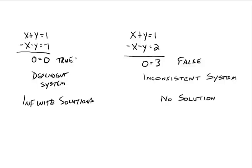Whenever all your letters disappear — whether you're doing the elimination or substitution method — you're left with a statement that is either true or false. In the case on the left, we have zero equals zero, which is a true statement. That means we have a dependent system, and if you were to graph them, one line falls on top of the other — they intersect at every point, so there are an infinite number of solutions. But if all letters disappear and you get a false statement like zero equals three, that's an inconsistent system with no solution — the lines would be parallel and would not intersect.